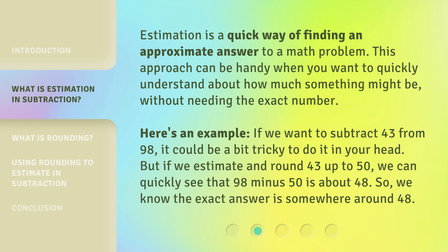Estimation is a quick way of finding an approximate answer to a math problem. This approach can be handy when you want to quickly understand about how much something might be, without needing the exact number. Here's an example. If we want to subtract 43 from 98, it could be a bit tricky to do it in your head. But if we estimate and round 43 up to 50, we can quickly see that 98 minus 50 is about 48. So, we know the exact answer is somewhere around 48.